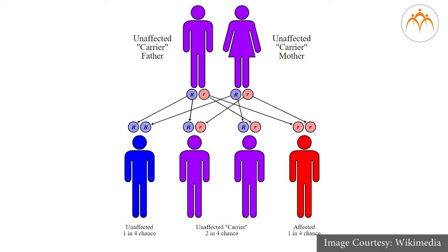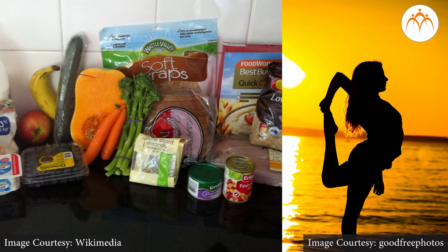Some traits are found to be determined by both genes and environmental effects. Height, for example, seems to be controlled by multiple genes — some are tall genes and some are short genes. A child may inherit all the tall genes from both parents and end up taller than both parents, or may inherit all the short genes and be the shortest one in the family. More often, the child inherits both tall and short genes and ends up about the same height as the rest of the family. Good diet and exercise can help a person with short genes attain an average height.